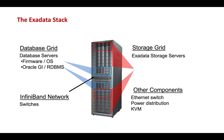The Exadata stack comprises of different components which are the storage grid, also called the Exadata storage servers or the storage cells. These are depicted in red in the figure. Taking an example of a full rack of Exadata, there are 14 storage servers — seven storage servers at the top and seven storage servers at the bottom.